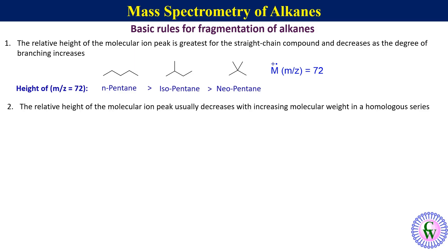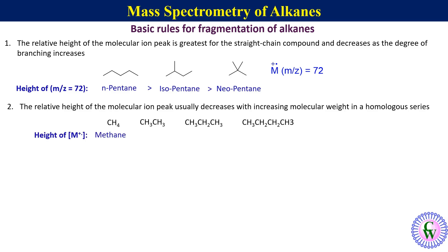Rule number two: the relative height of the molecular ion peak usually decreases with increasing molecular weight in a homologous series. For example, methane, ethane, propane, and butane belong to a homologous series — as we move from methane to butane, there is a difference of only one CH₂ between two successive species. Thus the height of the molecular ion peak will be highest for methane, followed by ethane and propane, and smallest for butane.